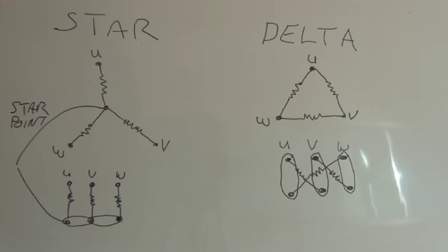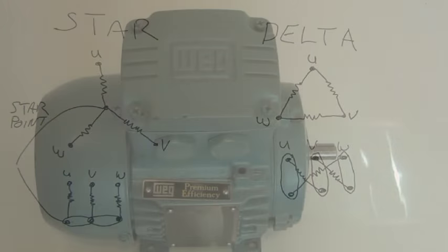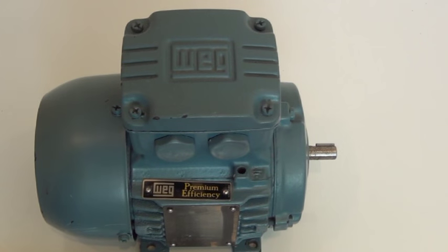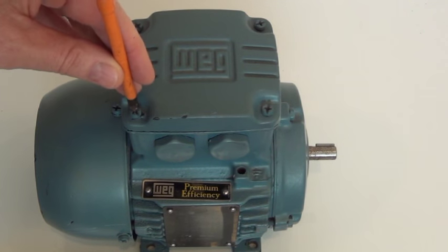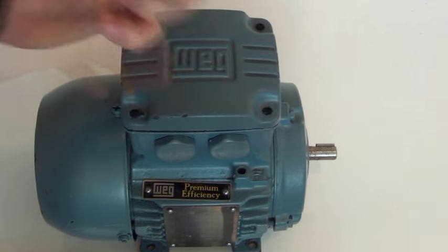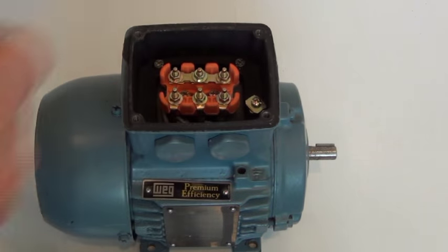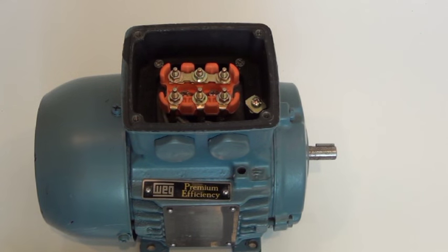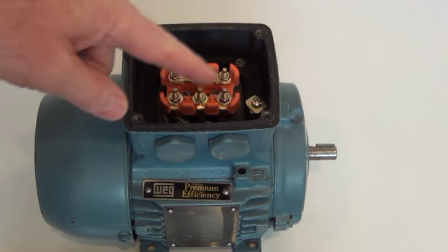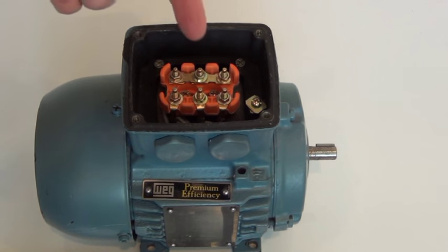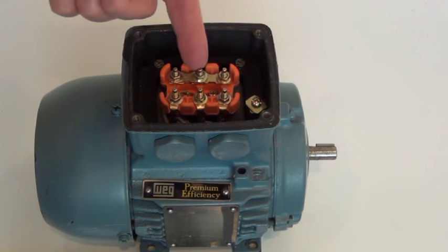So let's have a look at a motor terminal block. Here I have a WEG premium efficiency IE3 motor. I'm going to remove the terminal box cover and remove the gasket. This exposes the terminals, and as you can see from our previous discussions, we have a star point here, so this particular motor is connected in the star configuration.